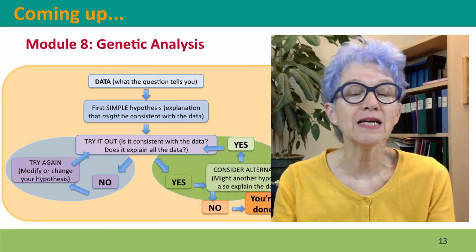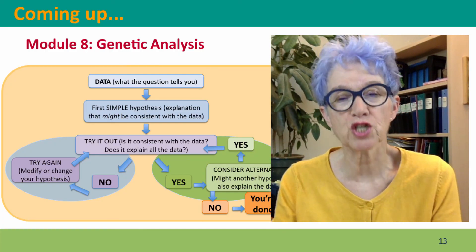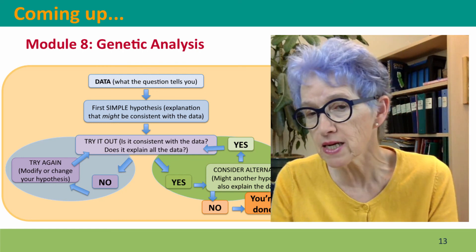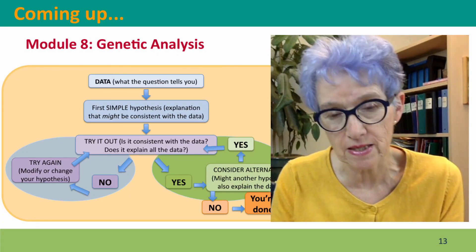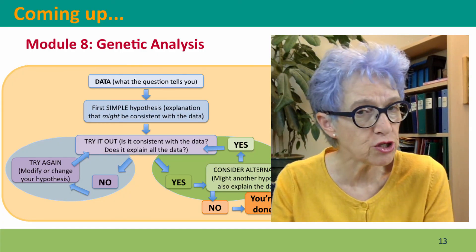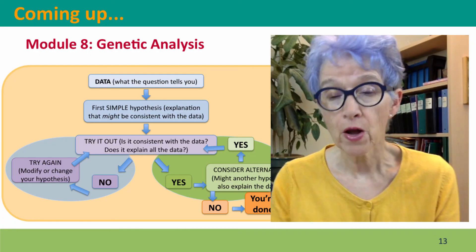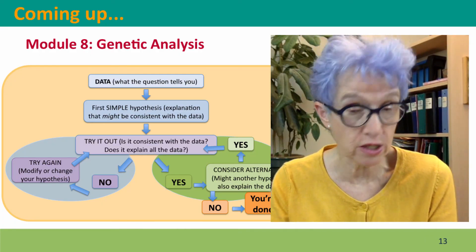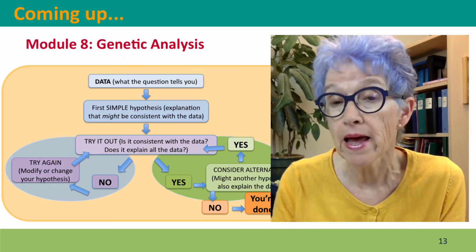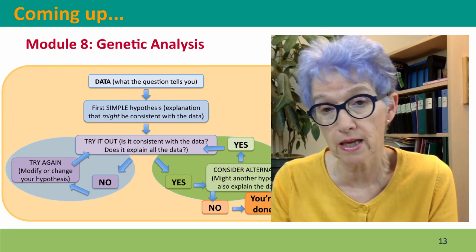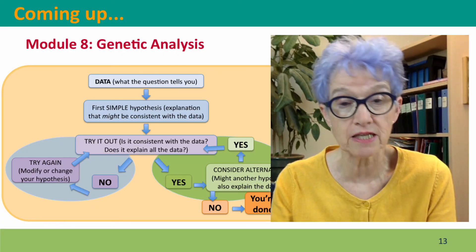Coming up next is Module 8, where we're going to move into Genetic Analysis — using crosses and analysis of phenotypes to gain understanding of how genes are inherited and how they work. Almost everything, until recently, that we knew about genes and about inheritance had been learned through Genetic Analysis. It's, if nothing else, a very powerful way to test your understanding. I hope to see you there.